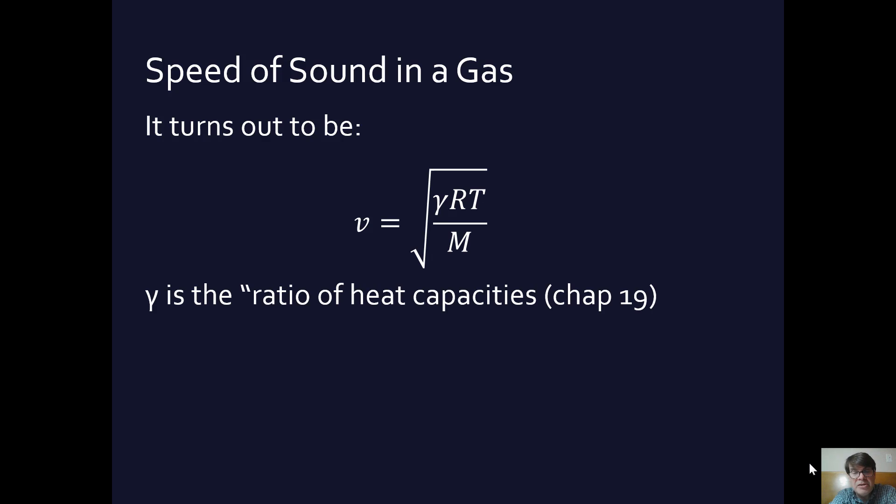What is gamma? Gamma is something called the ratio of heat capacities. It's a constant for a particular gas, but we're not going to find out about it until chapter 19.